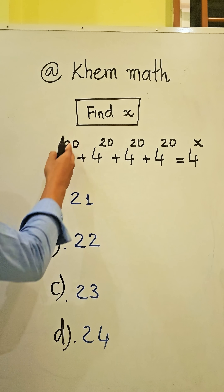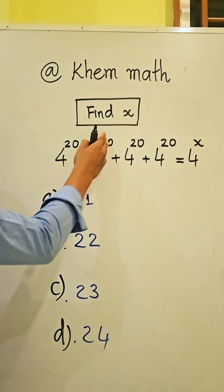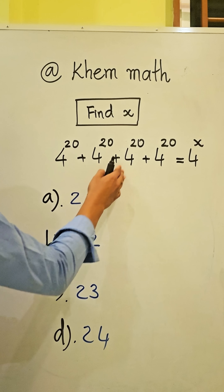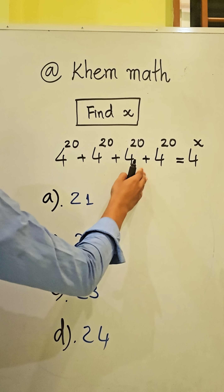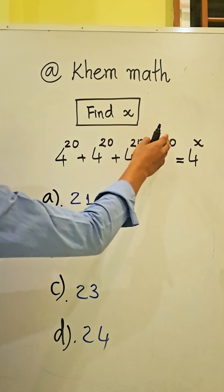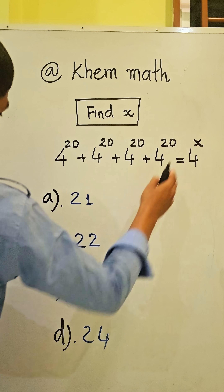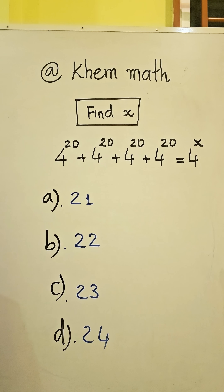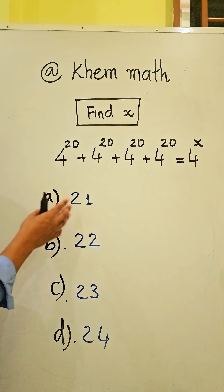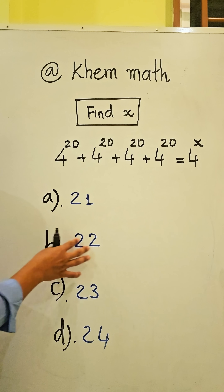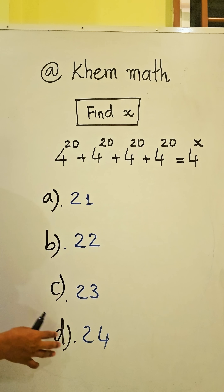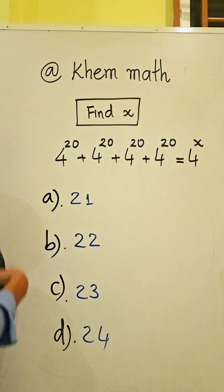Find: 4 power 20 plus 4 power 20 plus 4 power 20 plus 4 power 20 equals 4 power what? Our answer choices are 21, 22, 23, or 24. Which one is our answer?